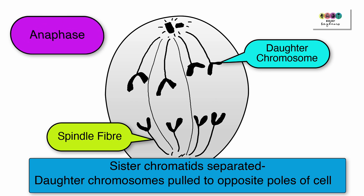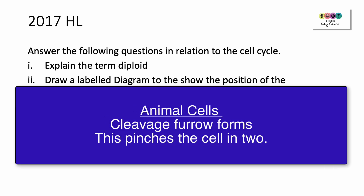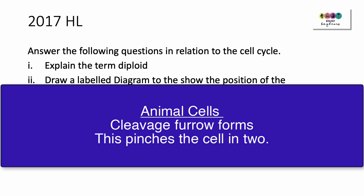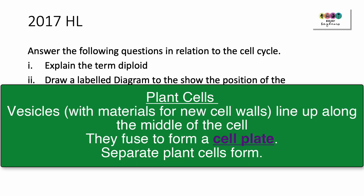After telophase of mitosis, how do animal cells and plant cells split in two? You're going to talk about the cleavage furrow for animal cells and the cell plate for plant cells. In animal cells, a cleavage furrow will form down the middle of the cell and eventually pinch the cell in two. In plant cells, vesicles with materials for the new cell walls line up along the middle of the cell, fuse to form a cell plate — most important to state cell plate — and eventually two separate plant cells will form.